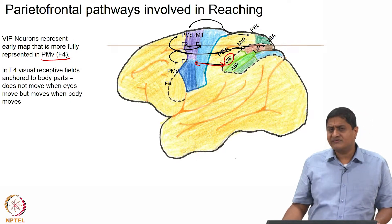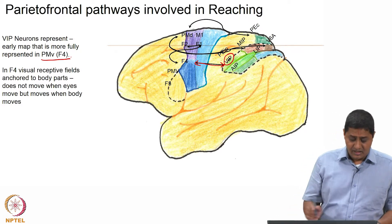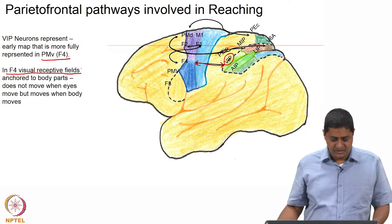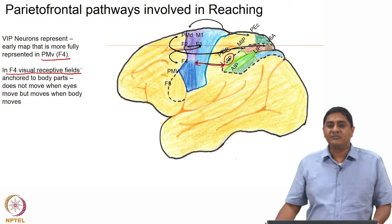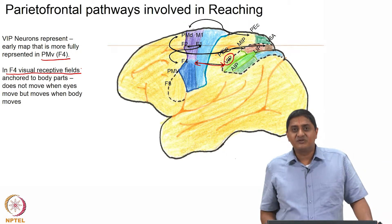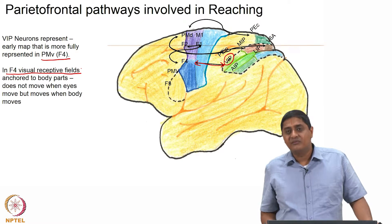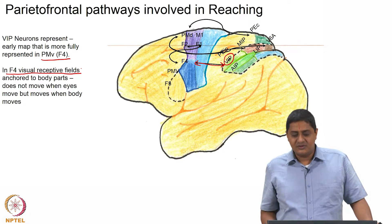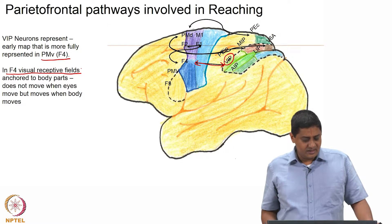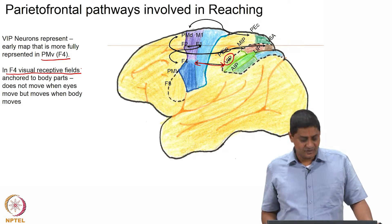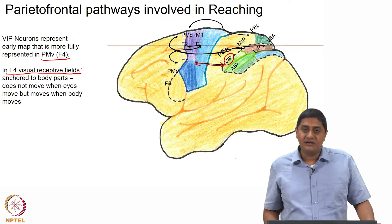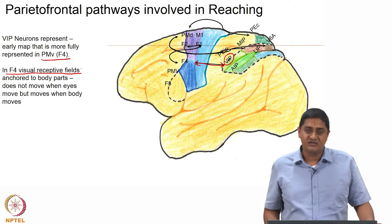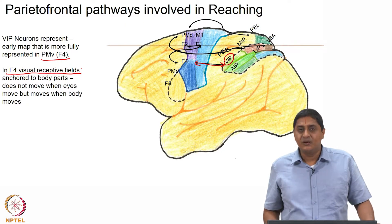Area F4, the ventral premotor region, has visual receptive fields that are anchored to specific body parts. That means this region has something to do with the state of a particular part of the body. It turns out that when the eyes are making a movement but not the body parts, these neurons are not active, but they are active when the specific region of the body is actually moving. So these are more related to motor function.